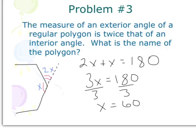What's the name of the polygon? Well, there's a couple ways we can go about solving this one. Some of you might already know and realize, well, it's 60 degrees, so it must be an equilateral triangle, and you'd be correct. However,